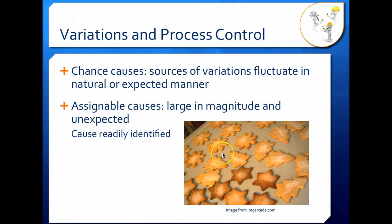If we take another example, these cookies here, the ones that aren't burnt, the difference in color in them, that's a chance cause. And there's just a little bit of color fluctuation here. The much darker ones have an assignable cause. These are burnt. So when you burn cookies, the color gets a lot darker. So even though there's a little bit of variation in the burnt color, we can see there's a clear difference between the properly cooked cookies and the burnt cookies. And that is our assignable cause is burning.